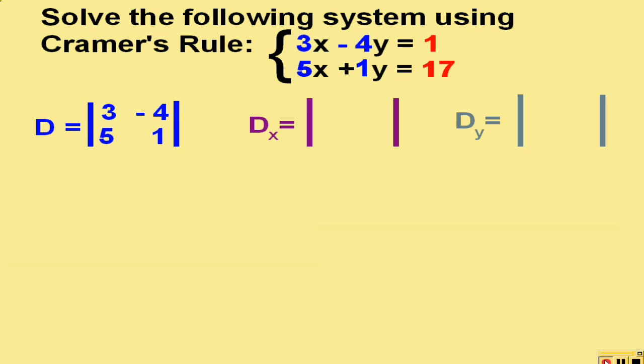To get the D sub x determinant, we use the coefficients of y and place them here, and instead of using the coefficients of x, we use the last two numbers in place of x.